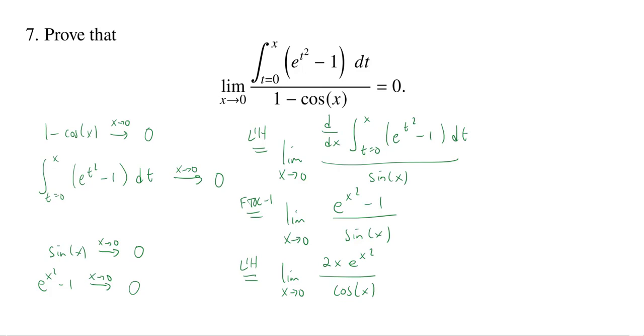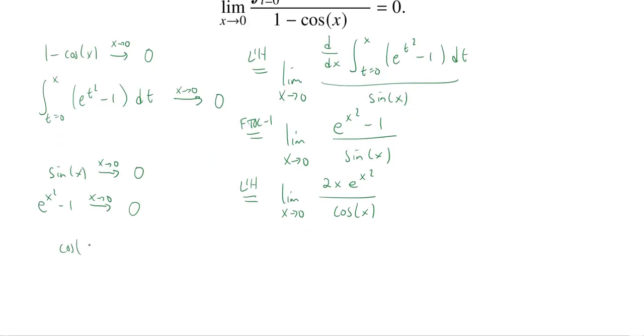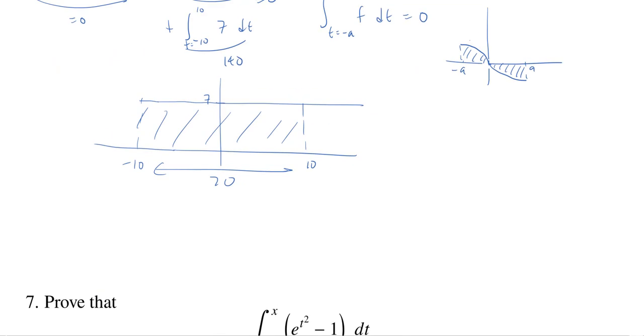Now what happens as x goes to 0? Cosine of x as x goes to 0 goes to 1—I don't get a 0 on the bottom. What about 2x e to the x squared as x goes to 0? Well, x goes to 0, this product is going to 0, so this is going to go to 0 over 1, which is 0. Hey, they were right, it worked, awesome!